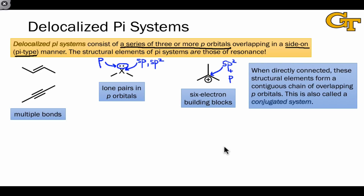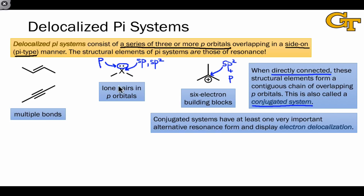One key point about delocalized pi systems is that these structural elements must be directly connected. If there's an sp3 hybridized atom between two sp2 hybridized atoms, that's not a conjugated system — the sp3 atom in the middle prevents delocalization and overlap of p orbitals. Another name for a delocalized pi system is a conjugated system, and we can say that the molecule as a whole displays conjugation. When these structural elements are linked to one another, the molecule has at least one, and often more than one, important alternative resonance form, indicating the delocalization of electrons over more than two atoms.